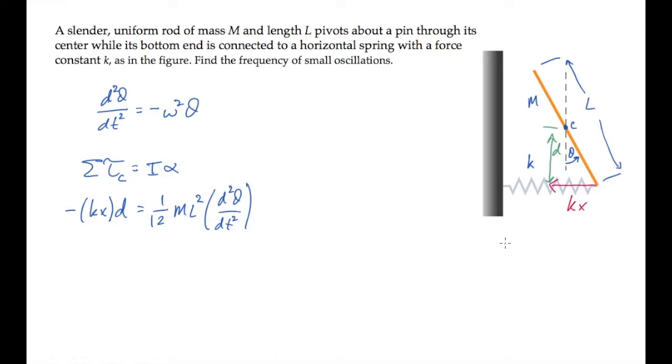Now on the left-hand side, we can rewrite the quantities x and d. x, the amount the spring is stretched, equals r theta, and that's l over 2 times theta. The moment arm d is l over 2 cosine of theta.